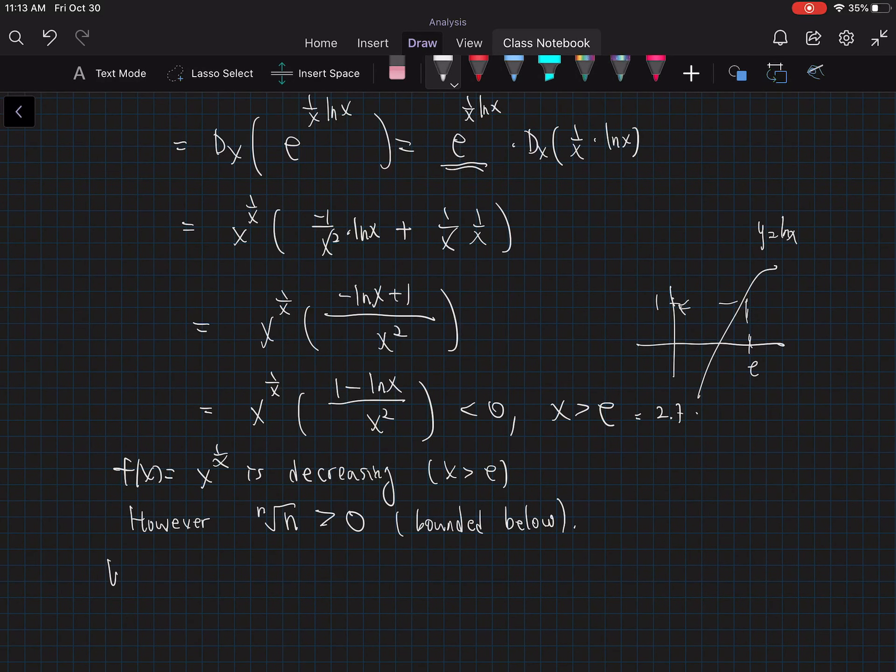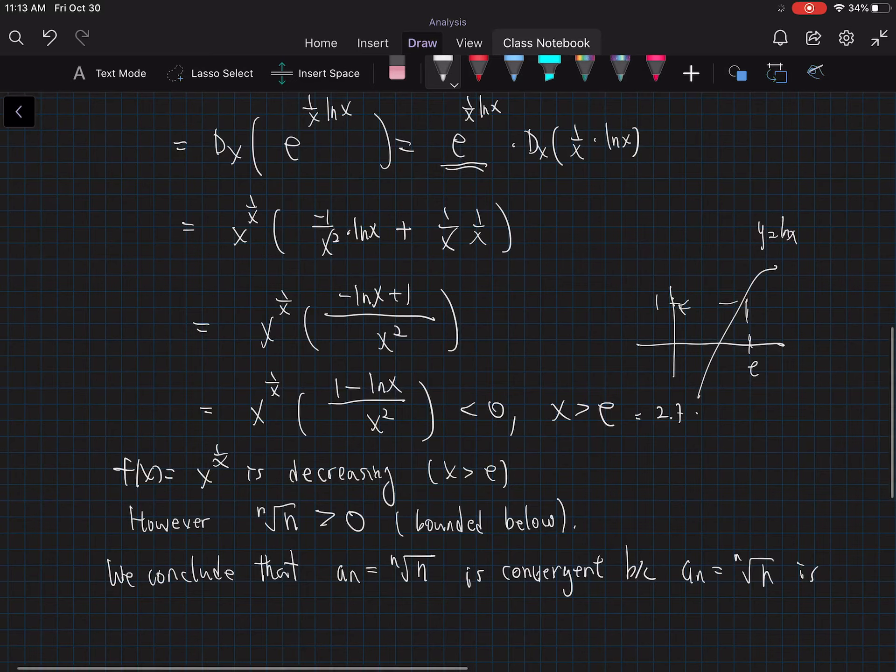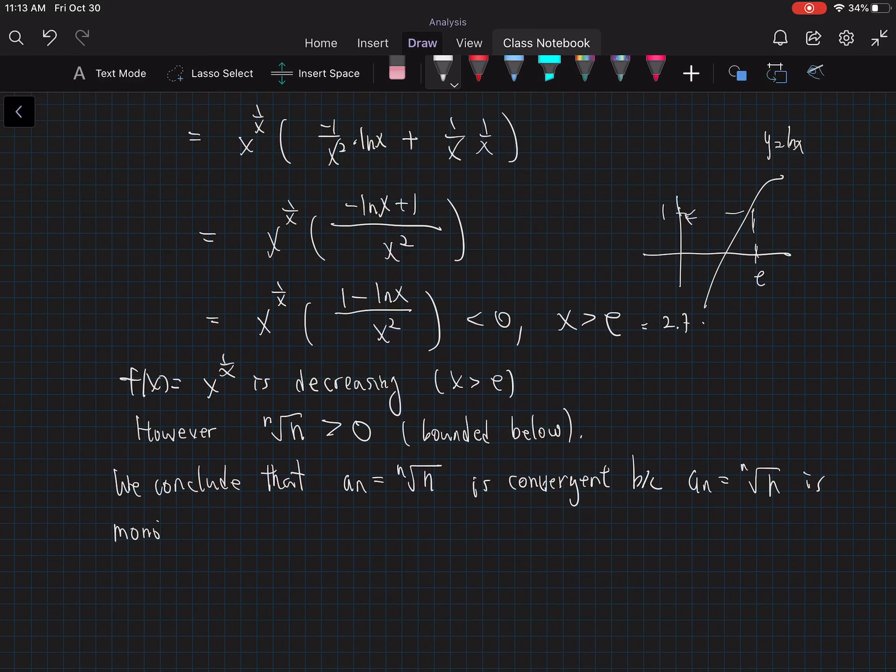So we can conclude that a_n equal to nth root of n is convergent because a_n equals nth root of n is monotonic decreasing and bounded below, you can say by 0. By using our theorem. So this is two examples we have of monotonic bounded sequence converges.